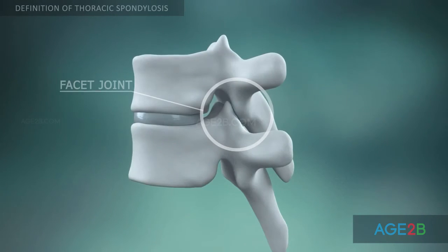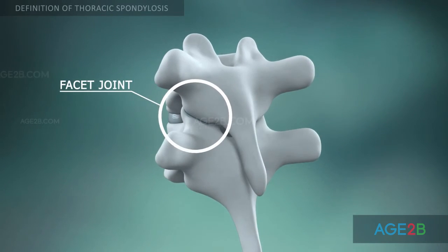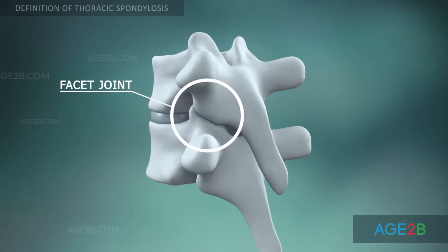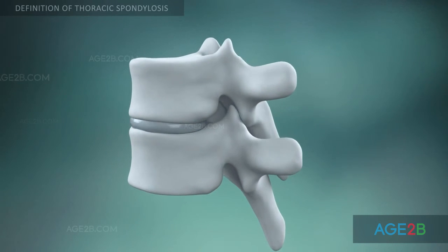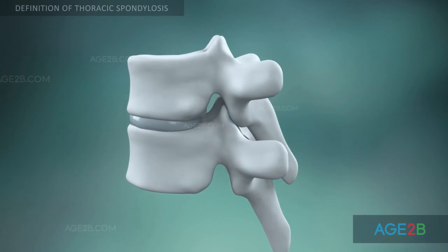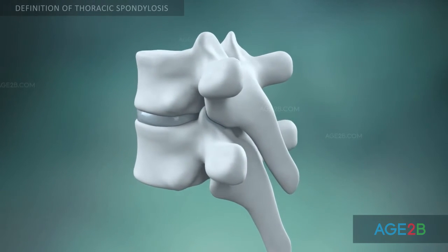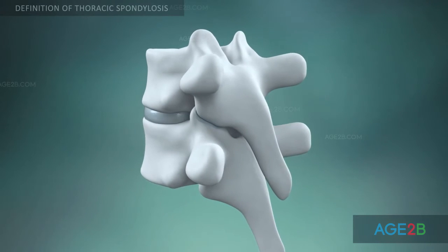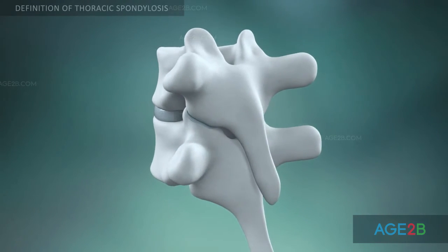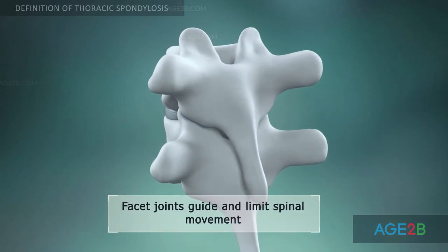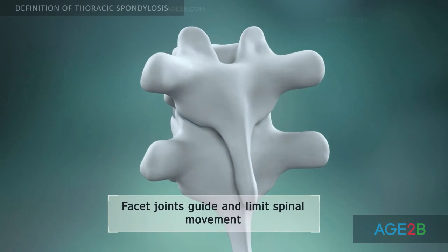Facet joints are located between each pair of thoracic vertebrae. They guide and limit the movement of the spine, providing stability and bearing a share of the load on the spine.